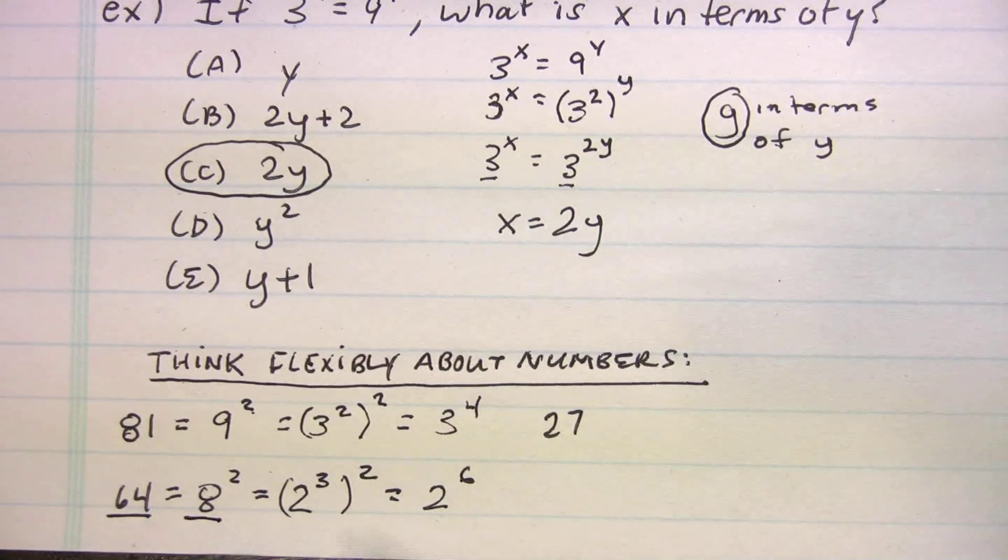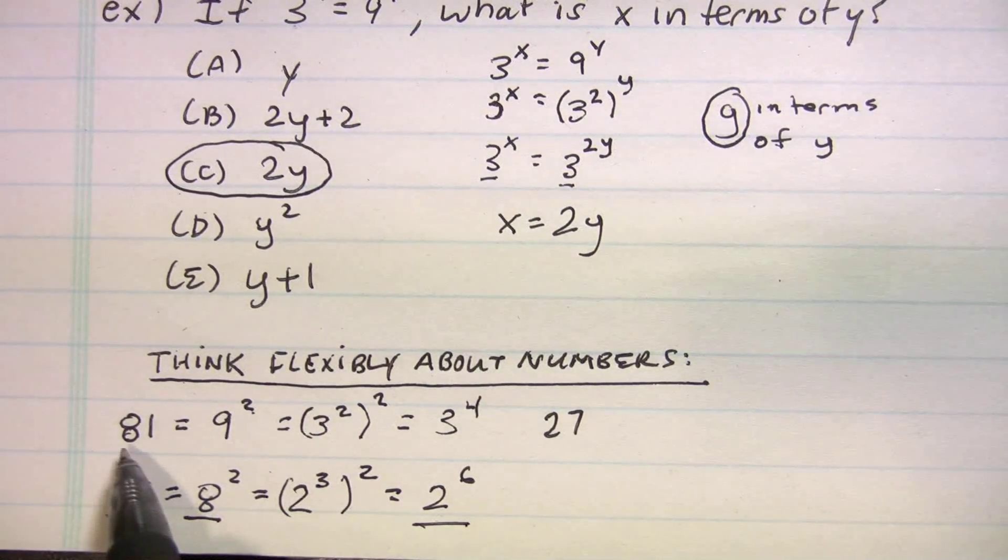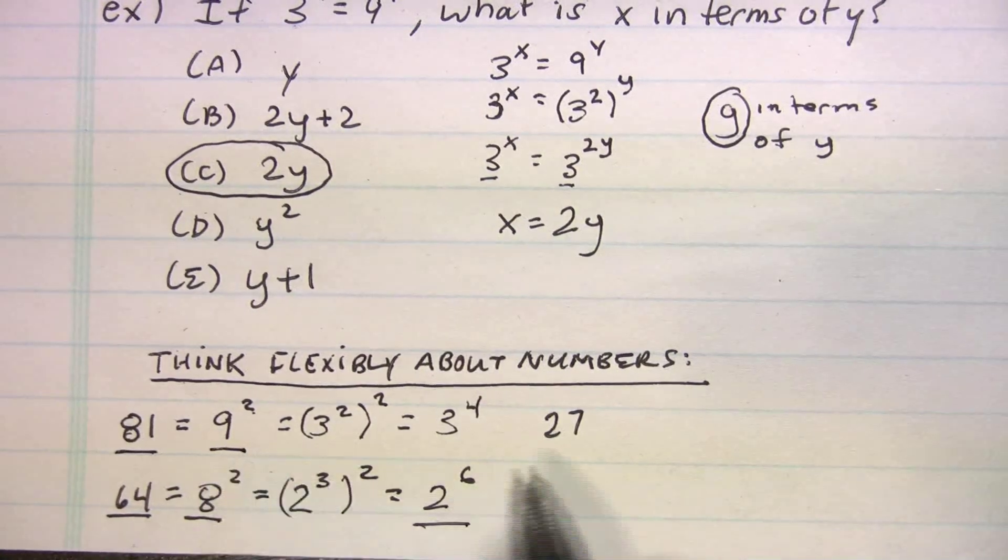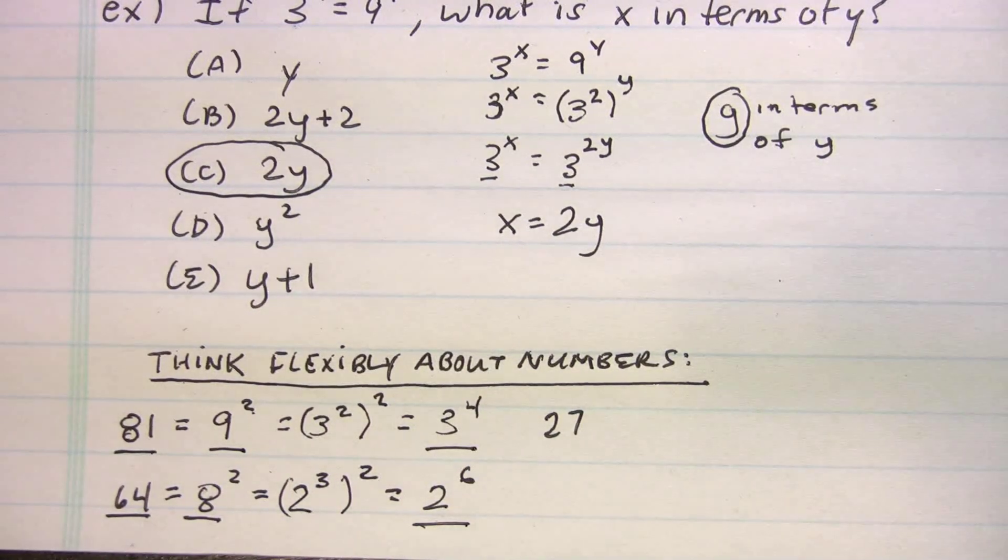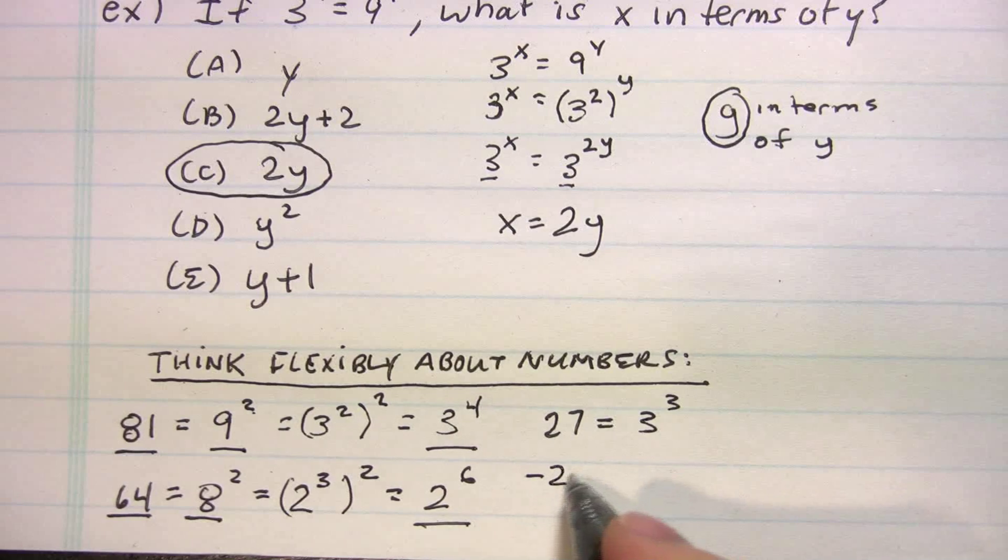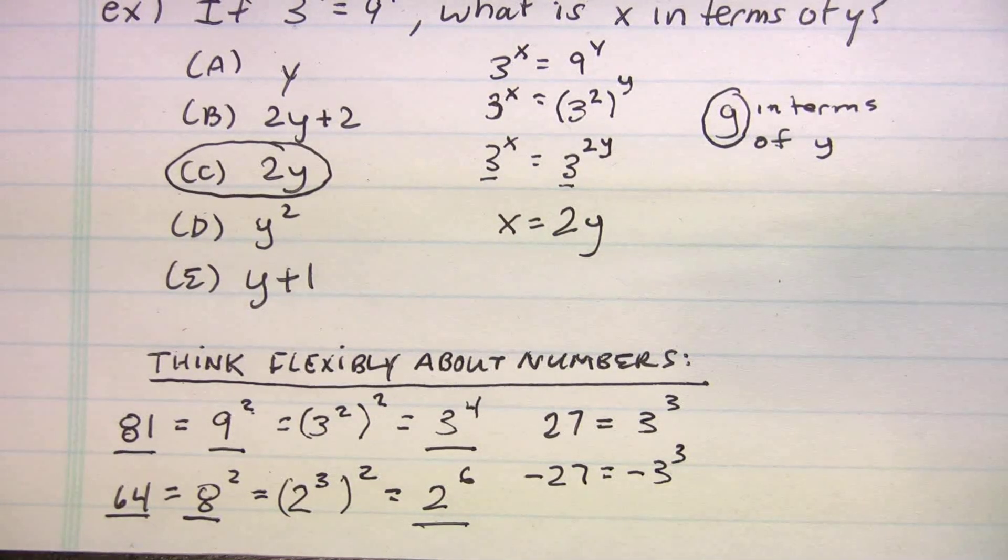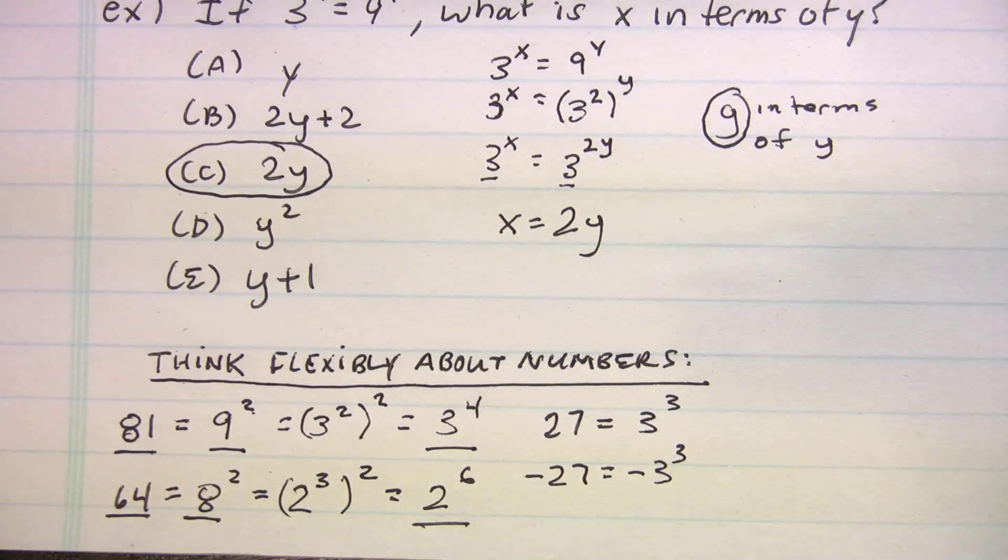81 is equal to 9 squared, which is equal to 3 to the 4th. And lastly, 27 is just a good number to know. You should know that that's 3 cubed. Negative 27 is negative 3 cubed. Just some good numbers to know. So that basically wraps up exponents, fundamentals 1. Stick around for fundamentals 2. We're gonna be doing some harder rules and some harder problems.